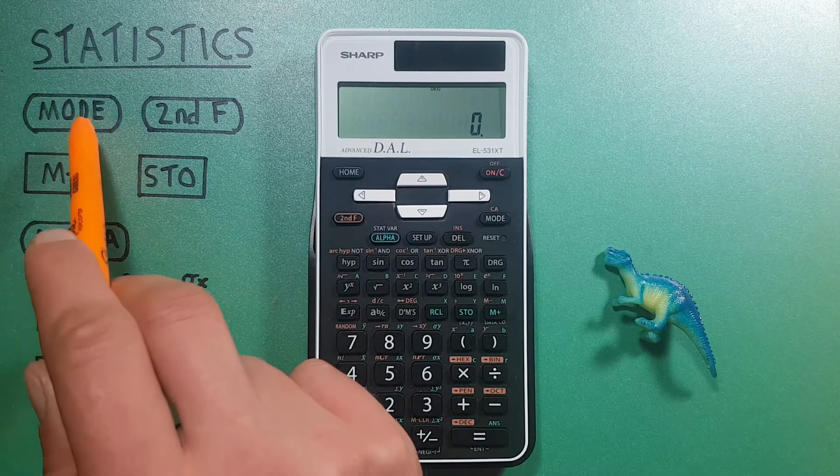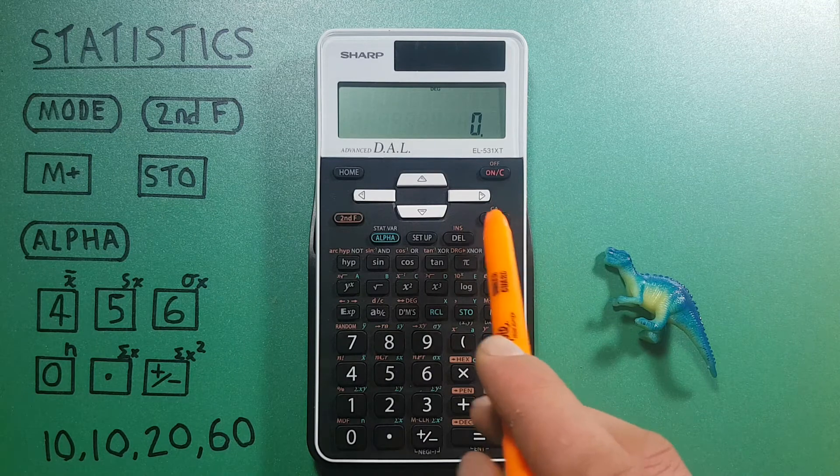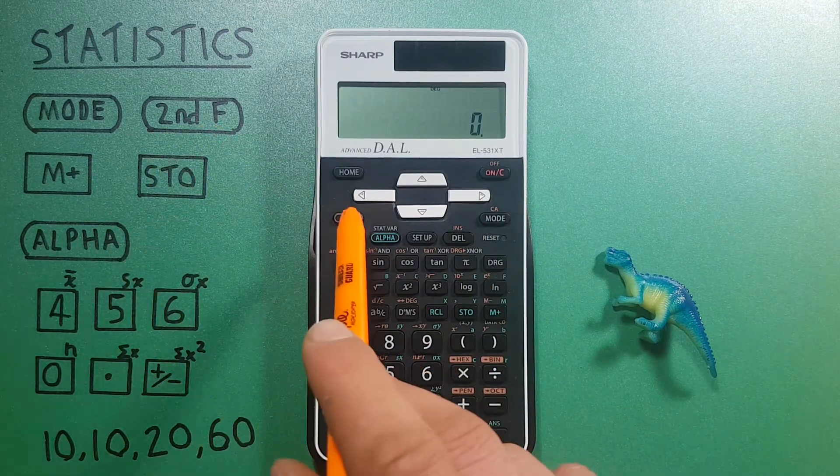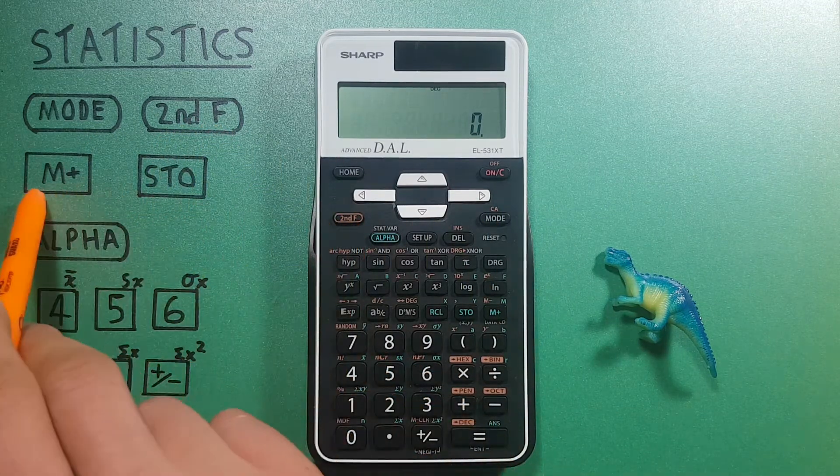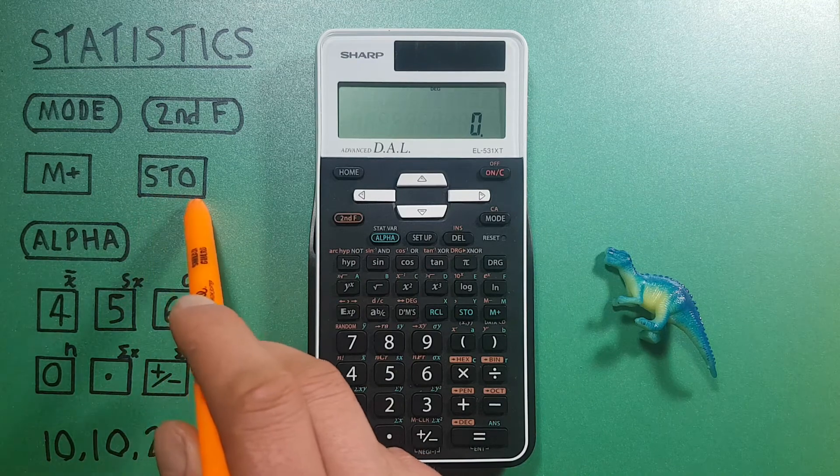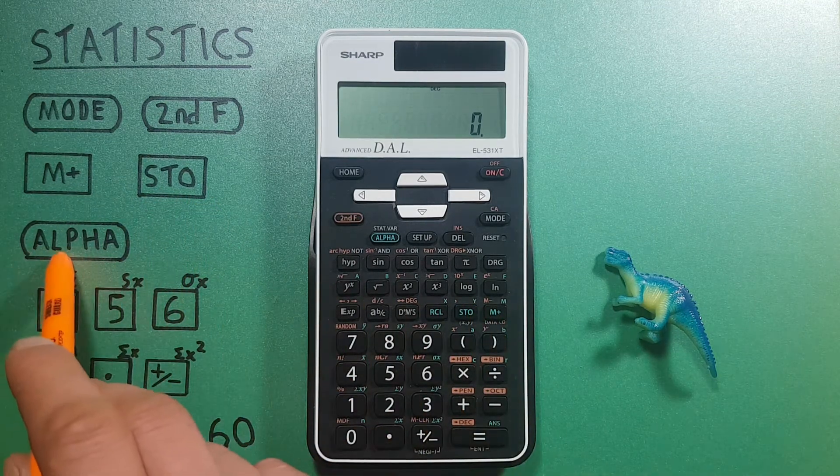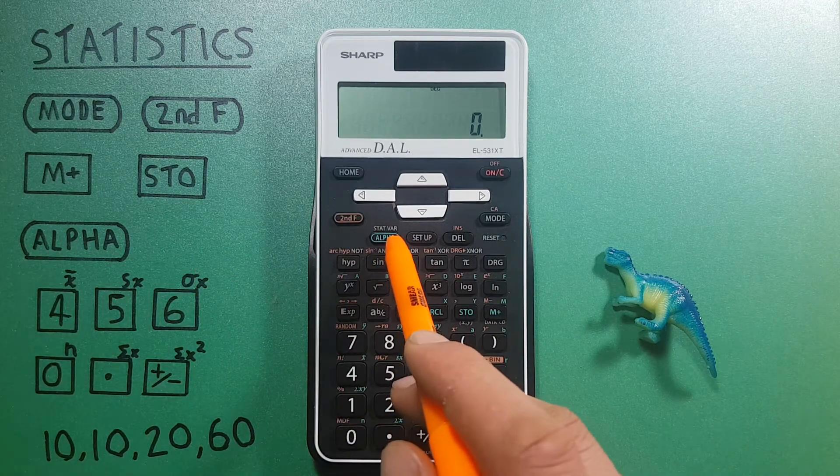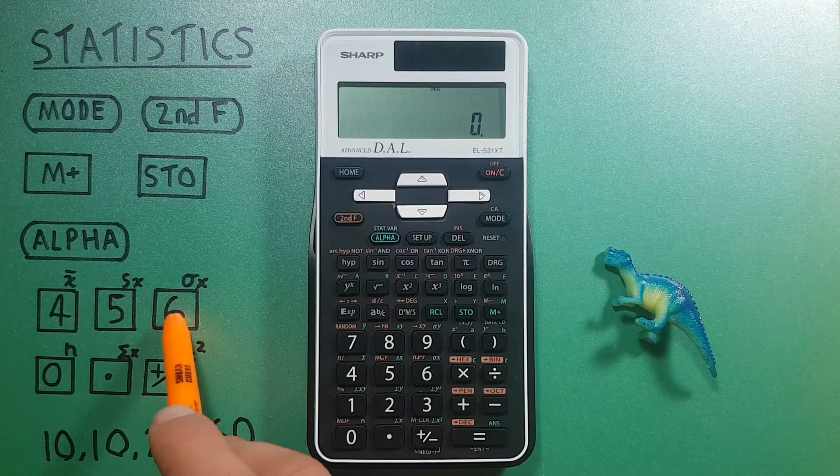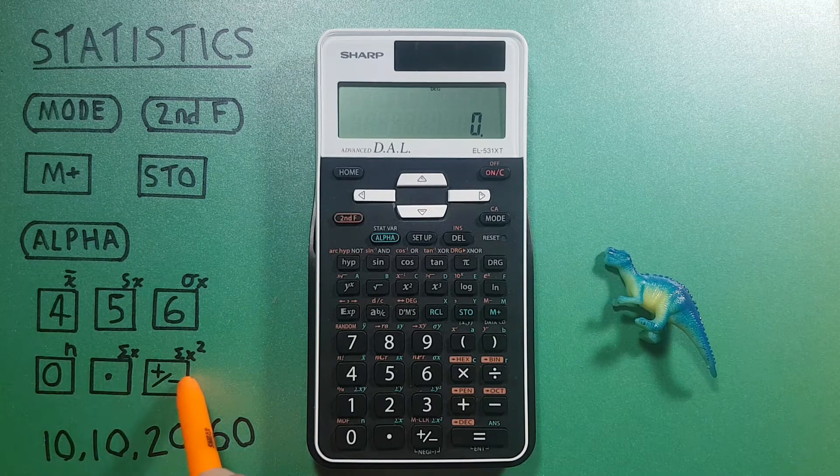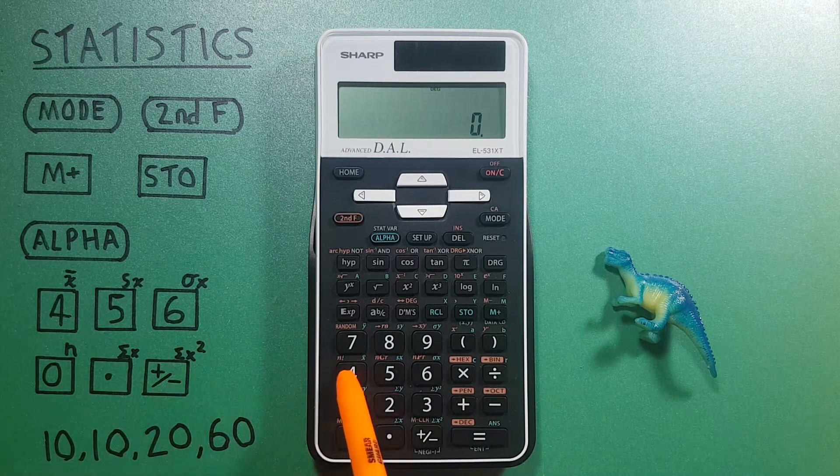To do this we'll be using the mode key located here, the second function key located here, the M plus and STO keys located here, as well as the alpha key located here, and the 456 zero decimal and plus minus key located here.